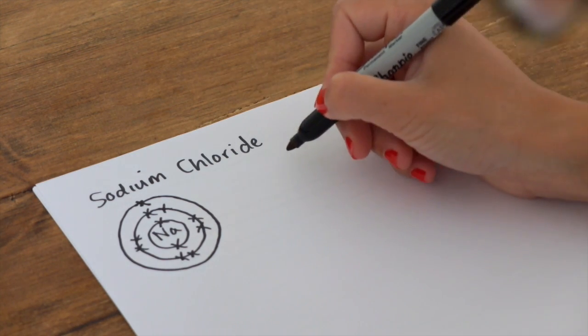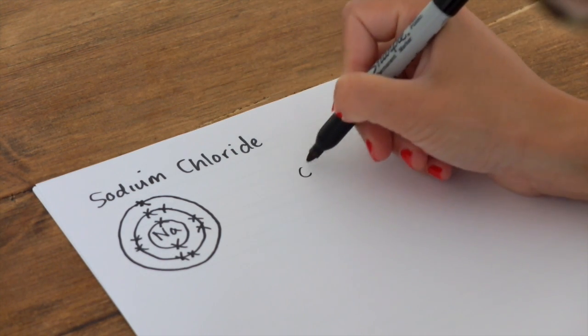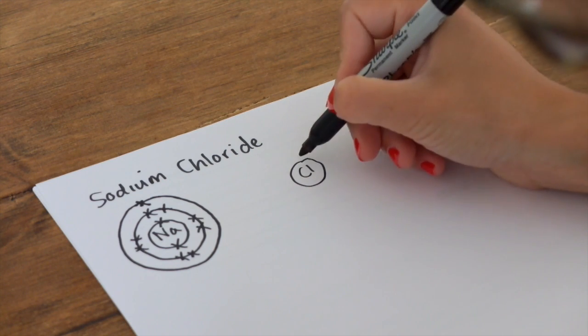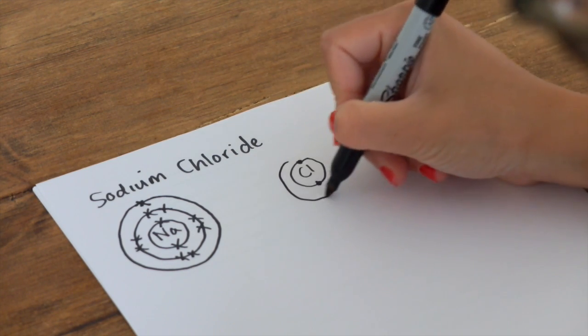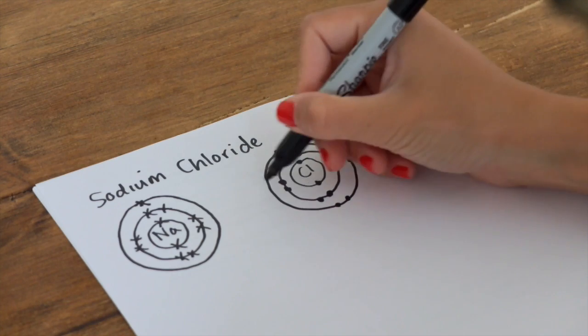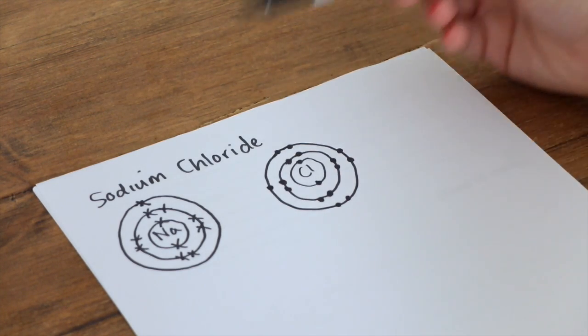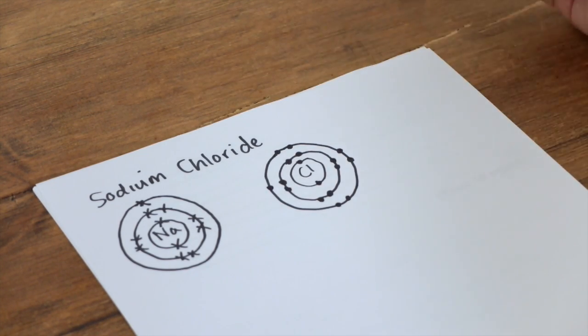So now chlorine, that has 17. Again, using the atomic number, tells me the electron number. I'm going to use dots to represent these electrons. Okay, so now we step back and we have a look. So sodium has one electron in its outer shell. Chlorine has seven.